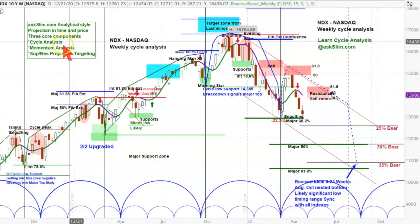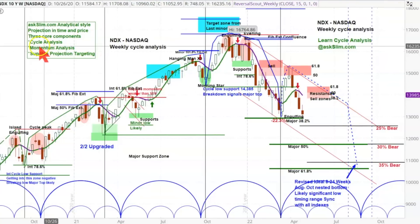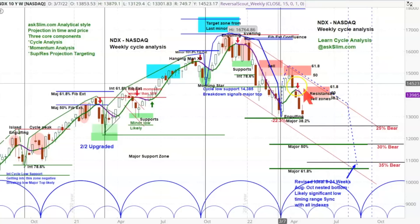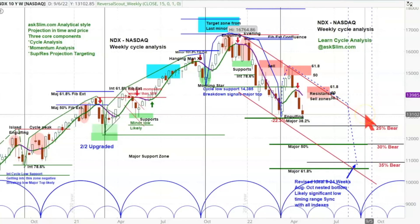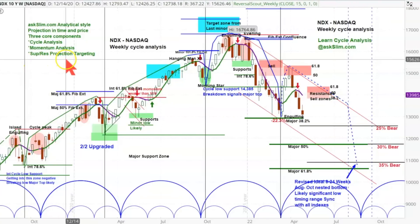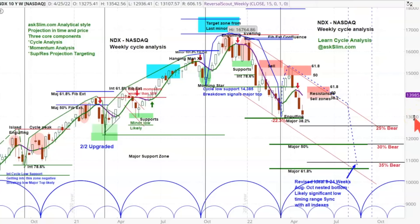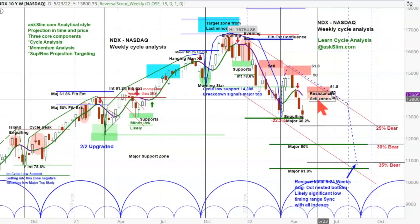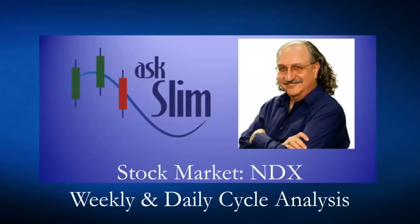Overall, these are all very negative indicators. Cycle analysis is clearly negative on all time frames. Momentum analysis is negative on all time frames except neutral on the two-hour chart, which may be turning negative. All of our support/resistance levels and projection targeting paint a quite negative picture: a low due in the next few days, an attempted rally hopefully into the sell zone so we get to sell, and then big declines coming after that. That is a look at our analysis for the stock market.